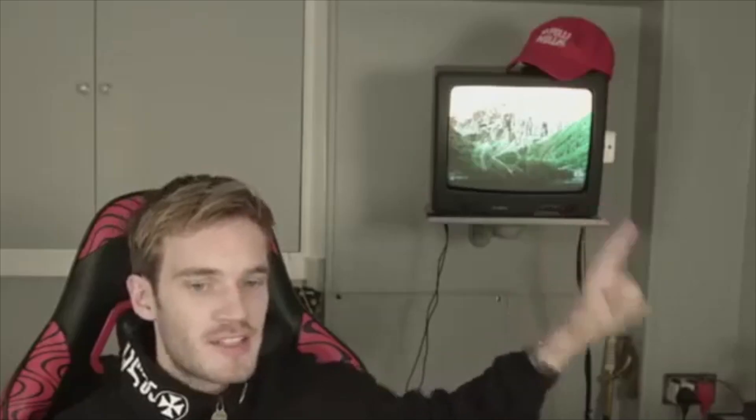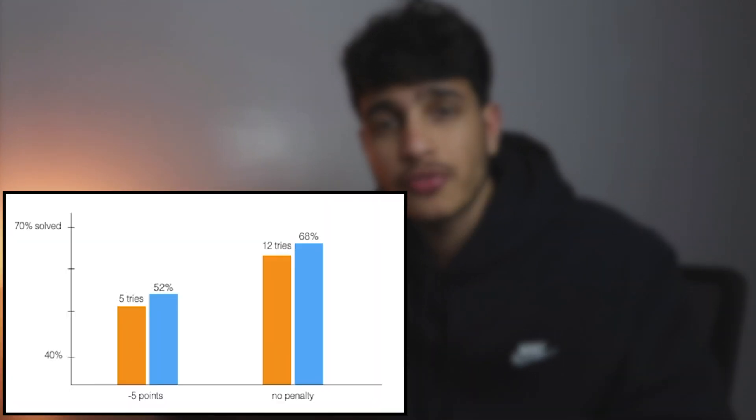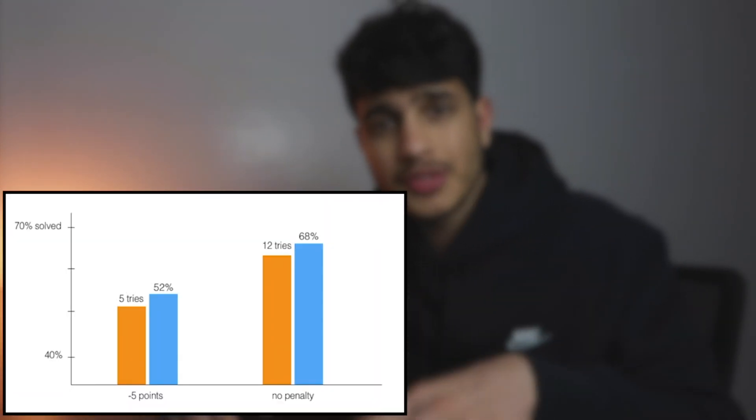The first group had a 68% success rate and the second group had a 53% success rate. That is a 15% difference, and for a college student, that's a whole letter grade. Furthermore, the first group, even after failing, on average attempted the puzzle 2.5 times more than the second group. What this means is that the first group, even though they failed, were still more inclined to try again and keep persisting.